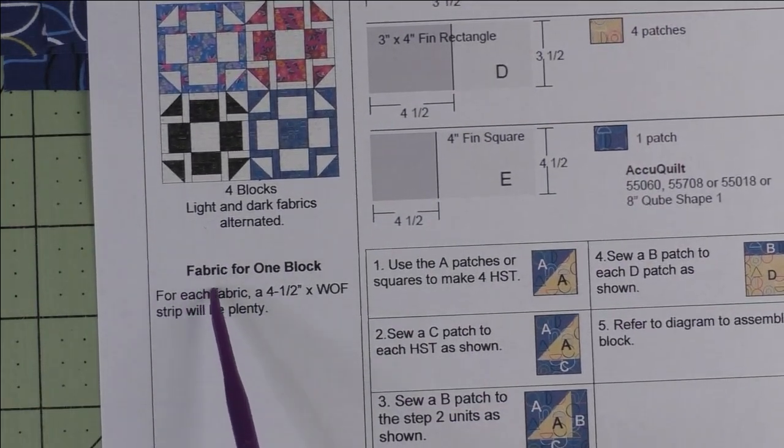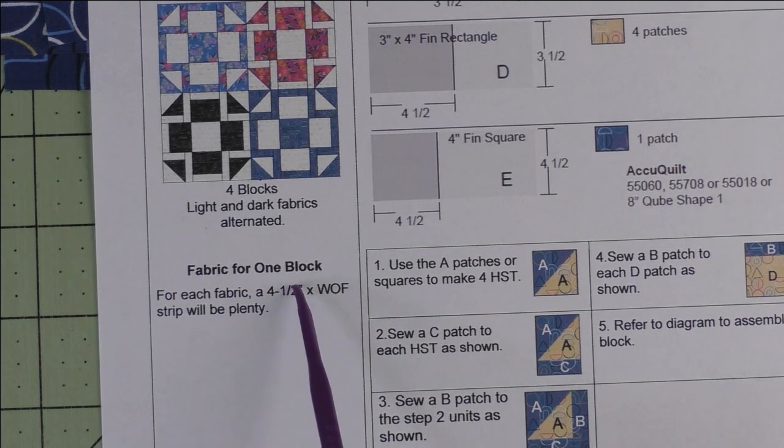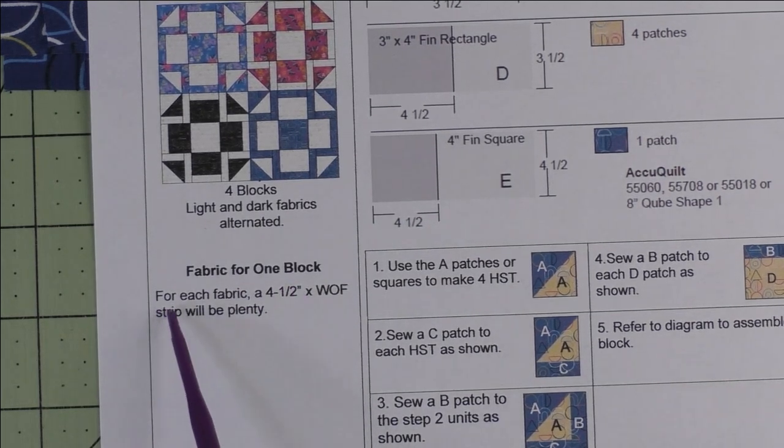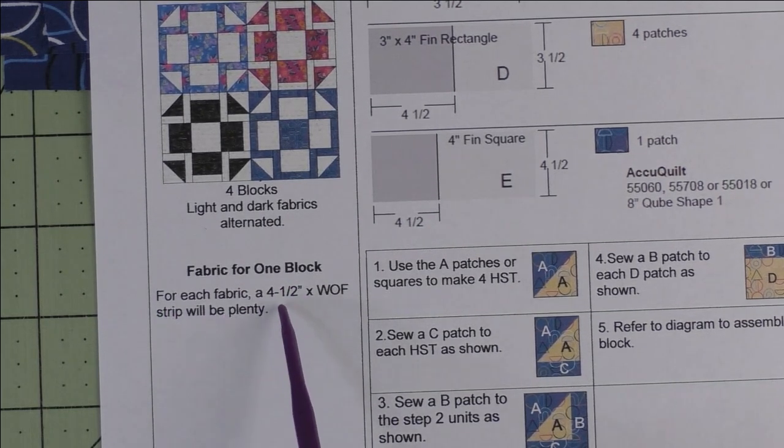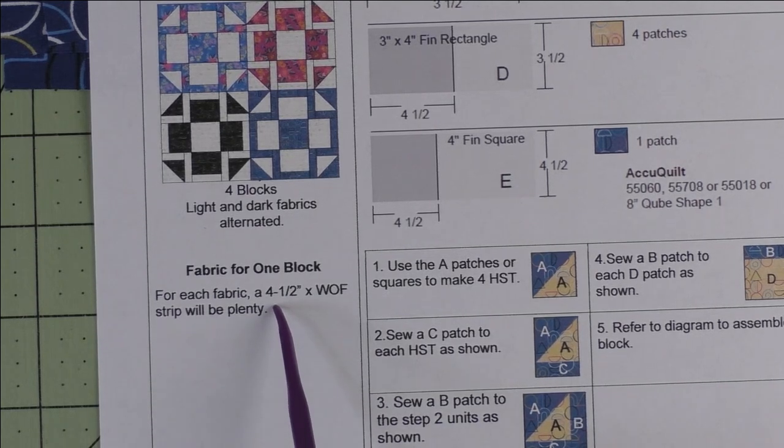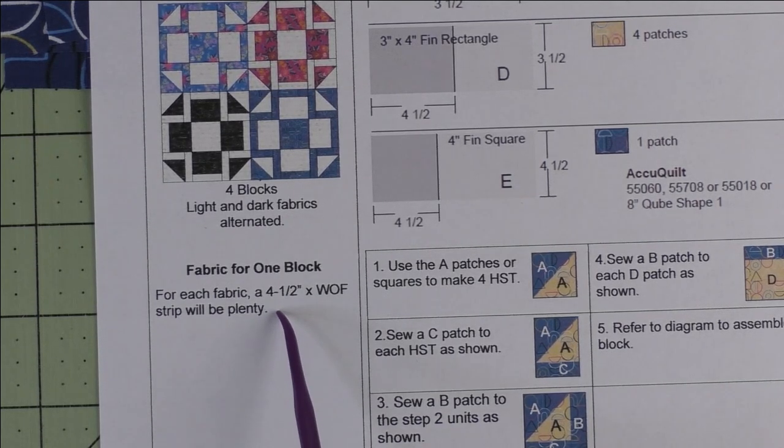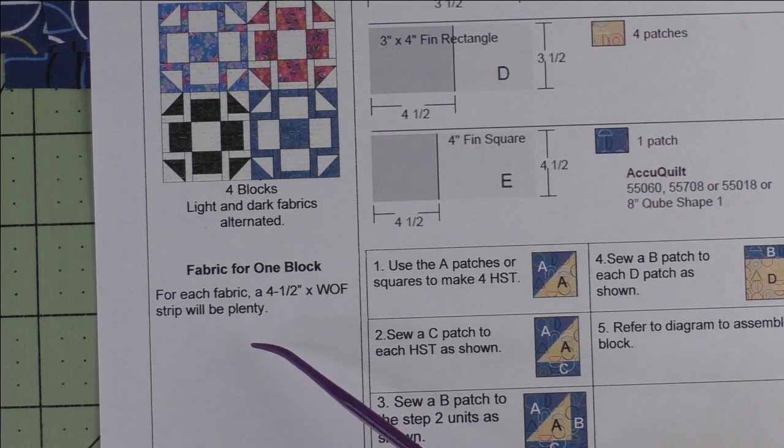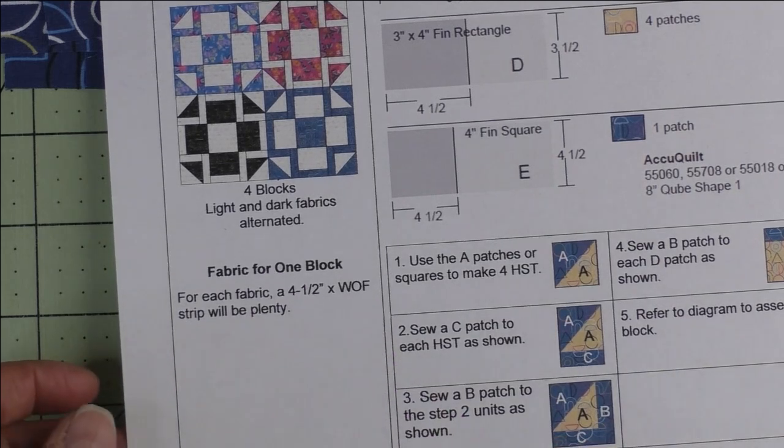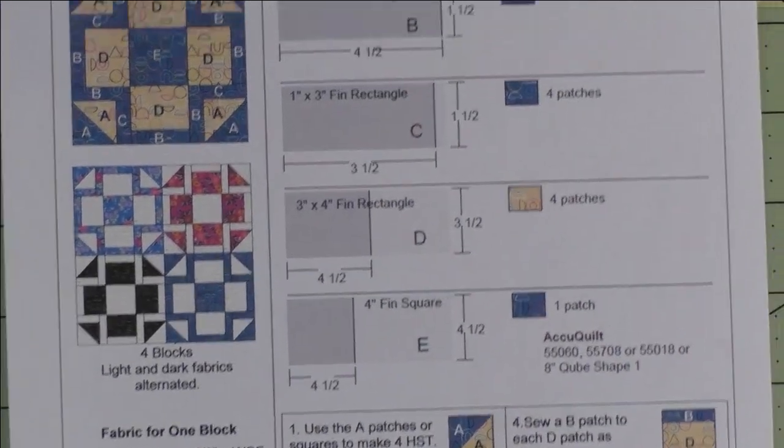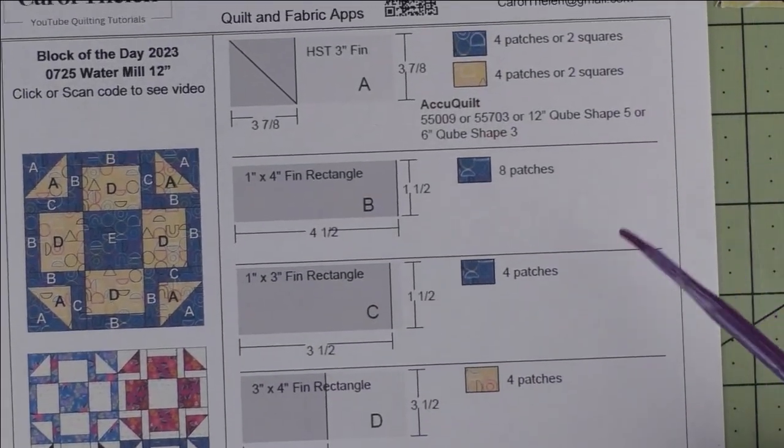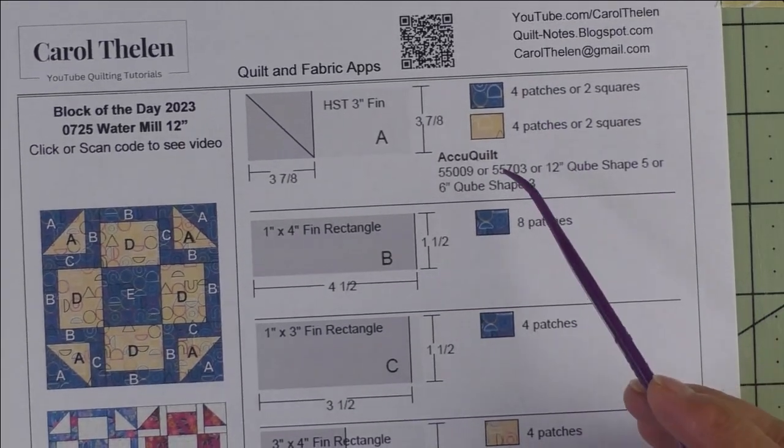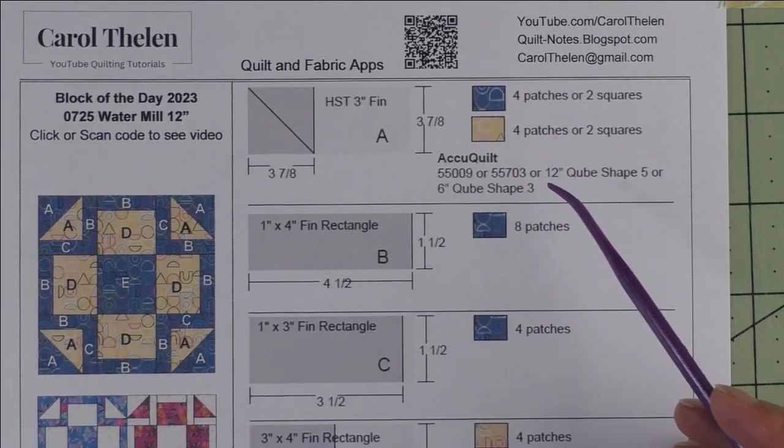When I can, I'm going to add how much fabric you need for one block. For this block, for each fabric, if you have a four and a half inch times the width of fabric strip, that's approximately how much you'll need from each fabric. That will be enough to make one block. It's just an estimate and might be an overestimate, but if you get that much you'll have plenty to make your one block.